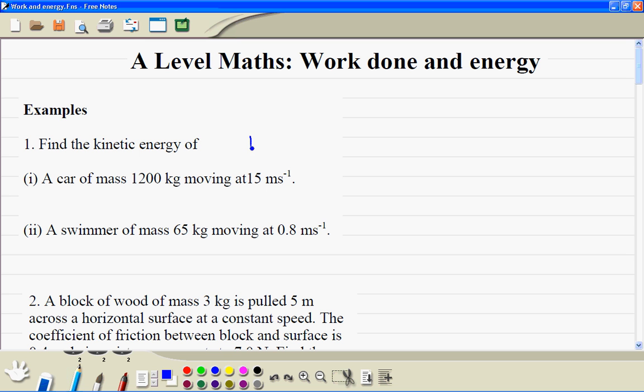The kinetic energy formula is KE equals half mv squared. For this question, KE equals half times 1200 times 15 squared, that's 135,000 joules, or we can write 135 kilojoules.